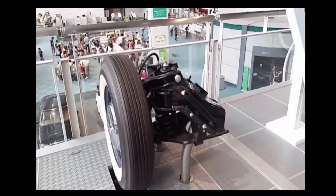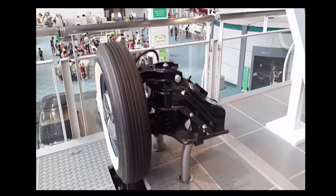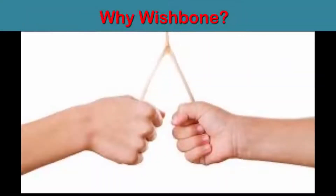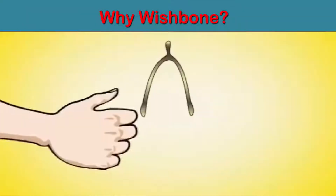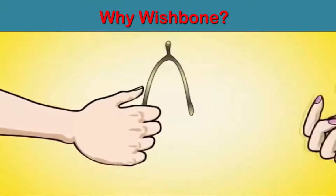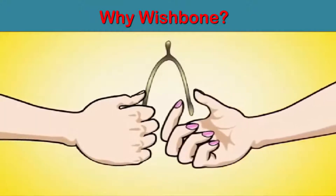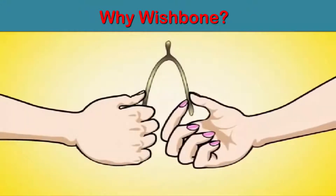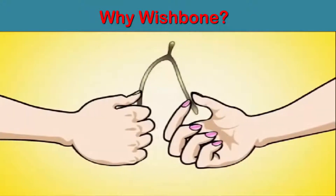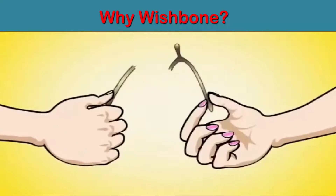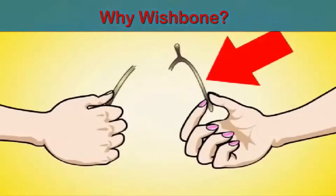A wishbone suspension system replicates the design of a bird's wishbone. Traditionally, a wishbone would be snapped apart by two people, each making a wish, and the person holding the longer piece was said to have good fortune or a wish granted.